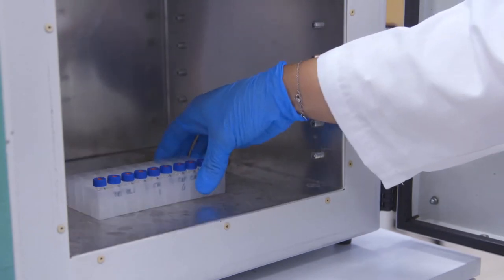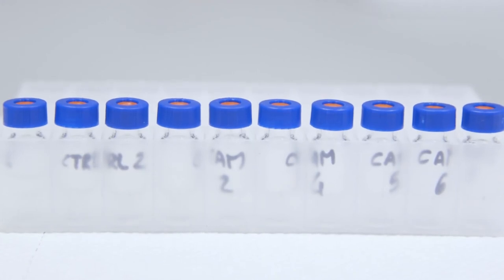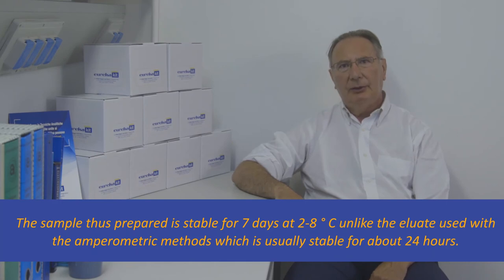We incubate our samples for 15 minutes at 70 degrees Celsius. Let them cool at room temperature. The sample thus prepared is stable for seven days at two to eight degrees Celsius, unlike the eluate used with the amperometric method which is usually stable for about 24 hours.